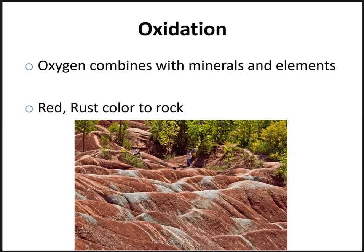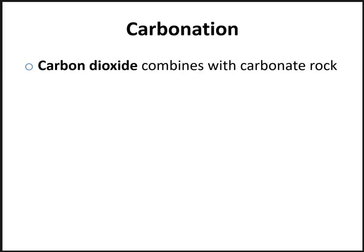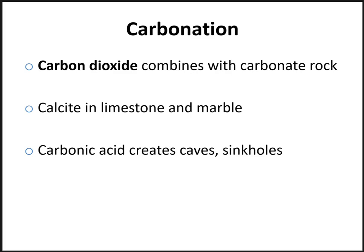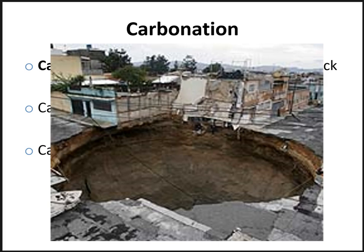The next type of chemical weathering is carbonation — the reaction between carbon dioxide, water, and carbonate rocks. Specifically, the mineral calcite reacts with carbon dioxide. Carbon dioxide dissolves into water and creates a very weak acid called carbonic acid that attacks the calcite in limestone and marble. Given enough time, the rocks get eaten away and it creates caves or sinkholes. A sinkhole forms when the underlying rock can no longer support the overlying soil layer, which caves in on itself.